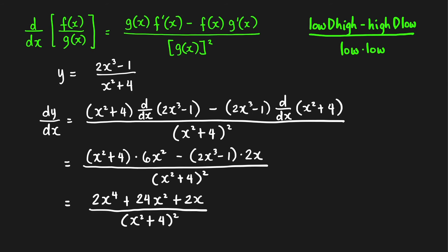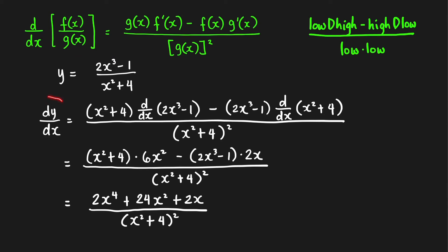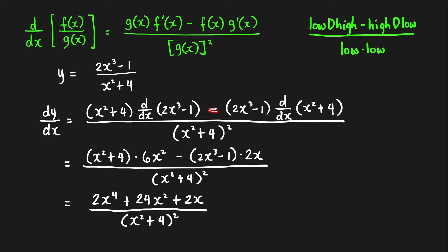Now let's have examples for the derivative of a quotient. Suppose y is equal to (2x³ − 1) / (x² + 4). When we take the derivative of both sides with respect to x, we denote that using Leibniz notation dy/dx. Then we use: low times the derivative of high, minus high times the derivative of low, over low low.